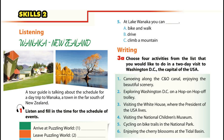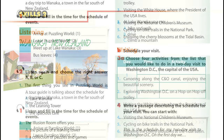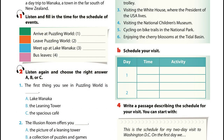Unit 8, Page 23. Skills 2. Listening. Activity 1. A tour guide is talking about the schedule for a day trip to Wanaka, a town in the far south of New Zealand. Listen and fill in the time for the schedule of events.